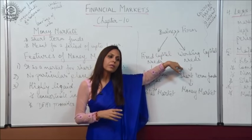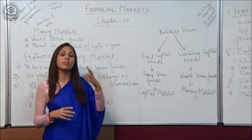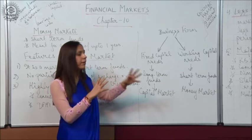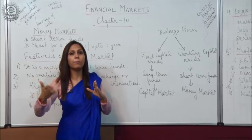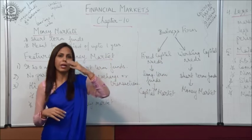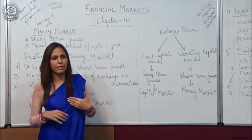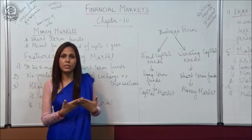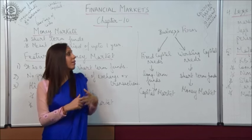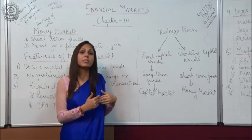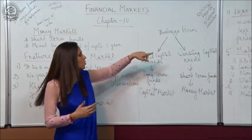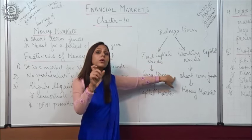Working capital is capital which is easily convertible into cash, and it is generally meant for a shorter period of time up to 1 year. In working capital we have current assets and current liabilities. Current assets, for example, are debtors, bills receivable, and stock in trade, whereas current liabilities are creditors and bills payable. So for working capital needs we require short-term funds.